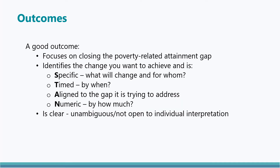Moving on to think about outcomes, a further reminder that these should link to the overarching aim of closing the poverty-related attainment gap. A good outcome is Specific, Timed, Aligned and Numeric — or STAN for short. That is to say it will identify what is to change, for whom, by how much and by when. Including all of this detail in the outcome makes it much easier to monitor the impact and measure whether or not the outcome has been achieved.